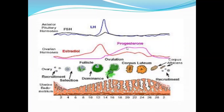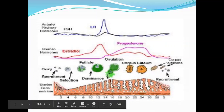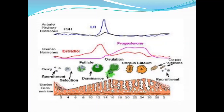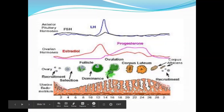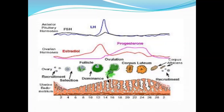As estrogen levels go down, progesterone levels gradually go up, increasing upon formation of the corpus luteum. If the ovum is fertilized by a sperm cell, the corpus luteum will remain and progesterone levels will stay elevated. During pregnancy, estrogen will rest. You can also notice a gradual increase in the thickness of the endometrial lining as the follicle develops and estrogen increases — this is in anticipation of pregnancy.